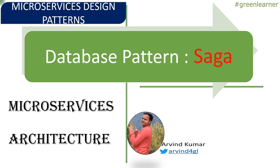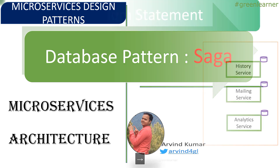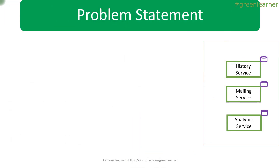Hey everyone, the topic for this video is Saga, which is a very important database pattern when it comes to maintaining transaction and data consistency across microservices. We are going to understand what this is all about, what are the use cases when this pattern is applicable, and how we can apply it in our architecture. Let's get started.